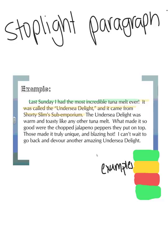The yellow sentence is an example of the tuna melt, or it gives us more details about this most incredible tuna melt ever. The third part of our stoplight paragraph is red — the red is going to stop and explain everything from our examples. The next sentence is: 'The Undersea Delight was warm and toasty like any other tuna melt.' So I'm going to highlight that next sentence red.